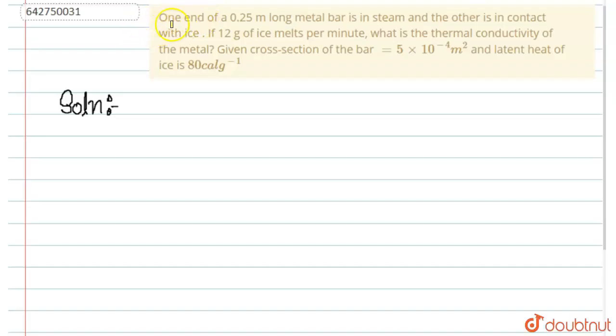So here is the question. One end of 0.25 meter long metal bar is in steam and the other is in contact with ice. If 12 gram of ice melts per minute, what is the thermal conductivity of the metal? Given the cross section of the bar is 5 into 10 to the power minus 4 meter square and the latent heat of ice is 80 calorie per gram.